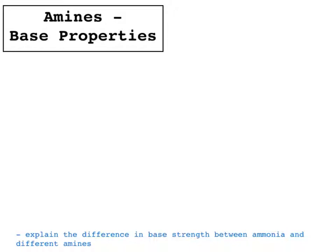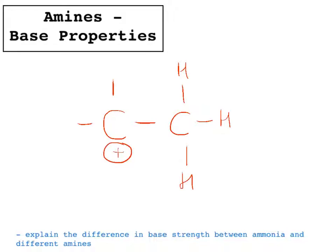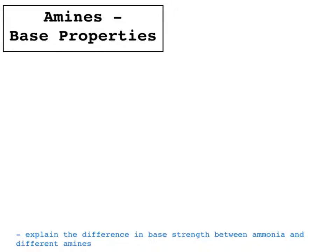We've got to think about what makes that positive charge more stable. We've come across this before in Chem 2 when we looked at carbocations in the addition mechanism. The more alkyl groups around a carbocation, the more stable it is, because alkyl groups have a positive inductive effect — they push electrons through their covalent bonds onto the positively charged carbon, making it more stable. We can apply that same idea to amines.